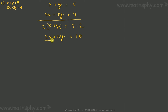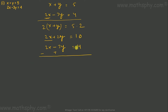Let's try to cancel x. We have 2x in one equation and x in the other. If I multiply the equation x plus y equals to 5 by 2, this gives me 2x plus 2y equals to 10. Now I have 2x in both equations. Subtracting — all signs go opposite, plus becomes minus, minus becomes plus — so 2x is cancelled. 2y plus 3y gives 5y.